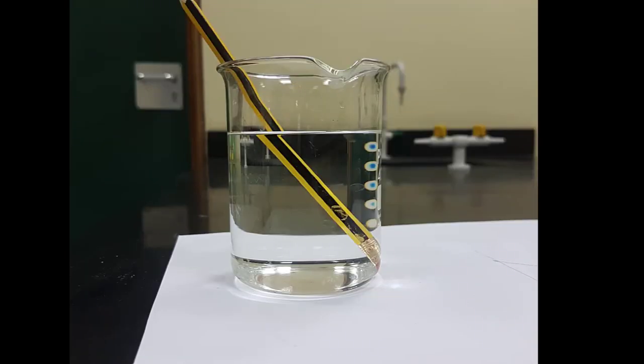Have you ever wondered why objects look distorted when you view them through glass and water? The answer has to do with the refraction of light. In this lesson, we are going to look at why light refracts, how to draw refractive ray diagrams, and measure the angles in those diagrams.